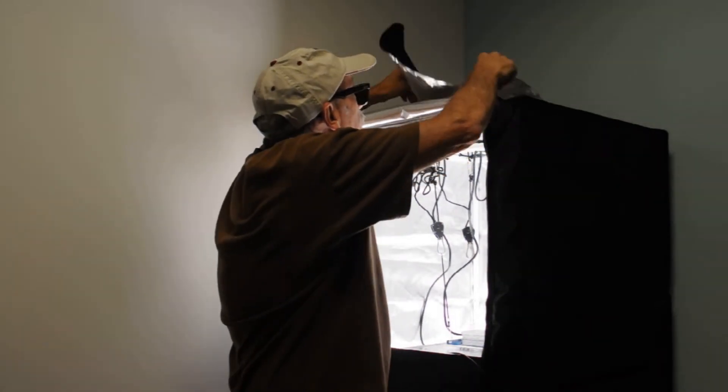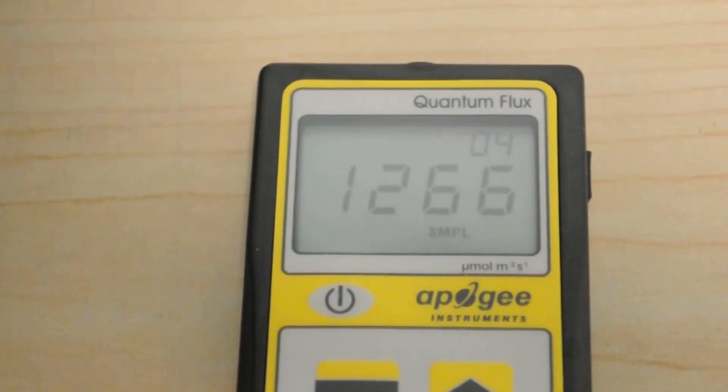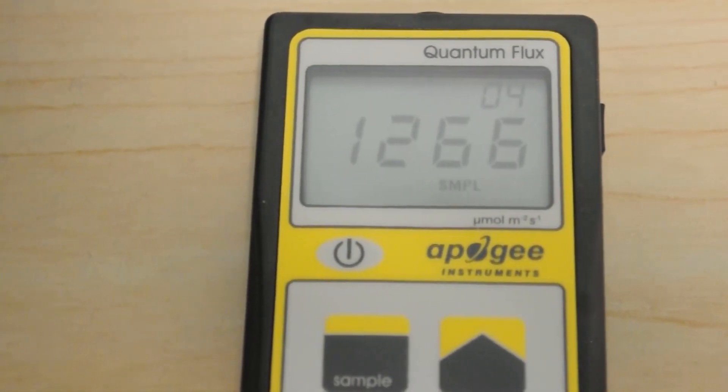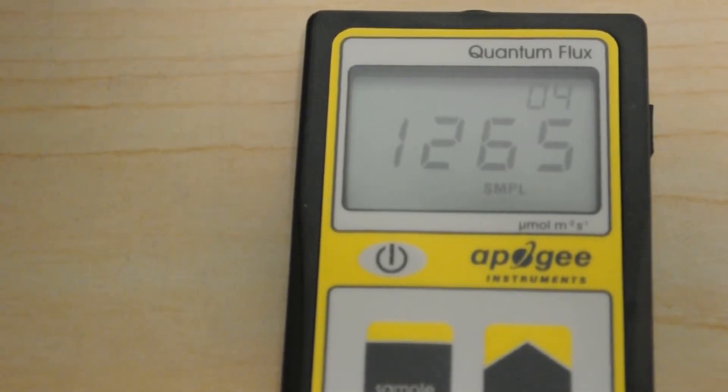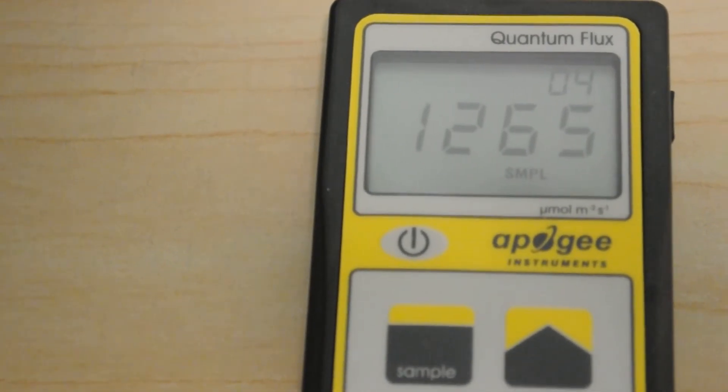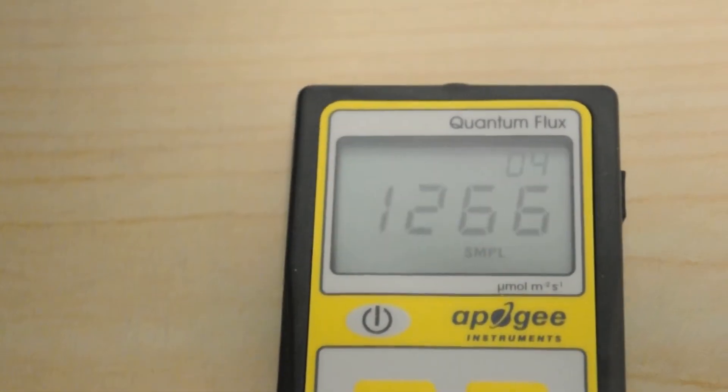Okay, so there it is. There's the dead center number for the Mars TS 1000. Looks like 1266, bouncing back and forth there between 1266 and 1265. So that's a very impressive number.